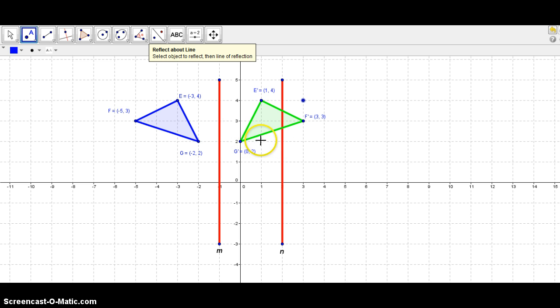G prime is two units to the left of line N. So therefore the reflection would be two units to the right. Okay, so this is two units to the right. Okay, that will be your G double prime.